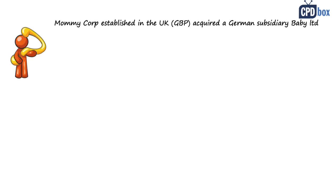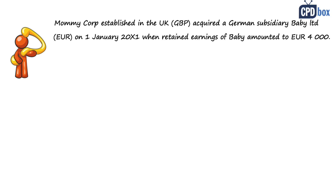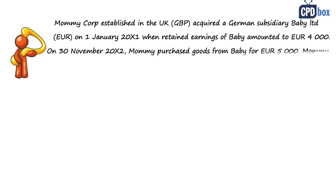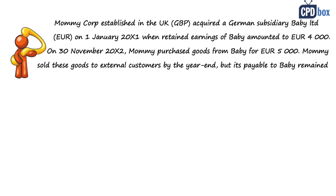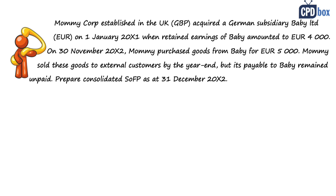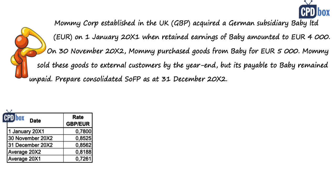Mommy Corporation, established in the United Kingdom with functional currency of British pounds, acquired a German subsidiary, Baby Limited, with functional currency euro, on 1st January 20x1, when the retained earnings of Baby amounted to 4,000 euros. On 30th November 20x2, Mommy purchased goods from Baby for 5,000 euros. Mommy sold these goods to external customers by the year end, but the payable to Baby remained unpaid. Prepare the consolidated statement of financial position as at 31st December 20x2.